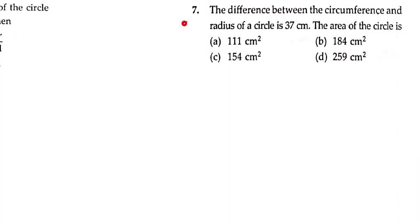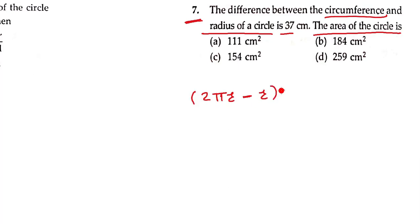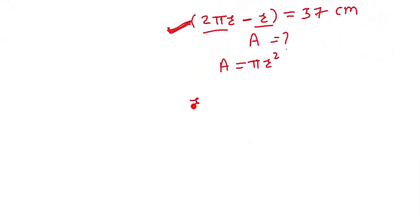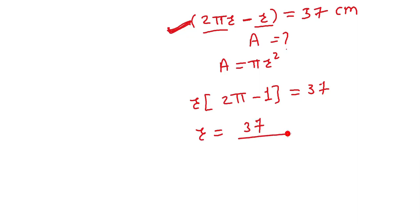Next question: The difference between circumference and radius of a circle is 37 — then area of the circle is. Difference मतलब subtraction है: 2πr − r = 37 cm। हमें area = πr² निकालनी है, तो पहले r निकालते हैं। r(2π − 1) = 37, so r = 37 / (2π − 1)।